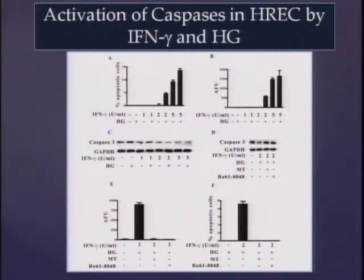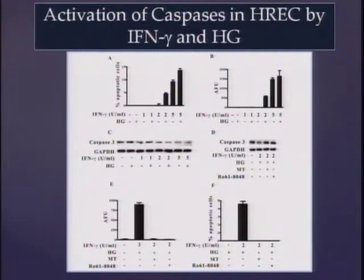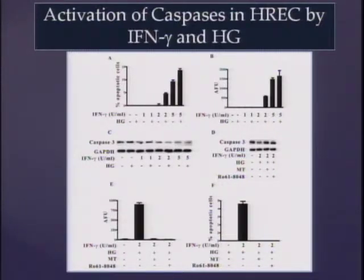Looking at percentage apoptotic cells: if you have interferon gamma in cell culture, you can induce apoptosis in HREC, but you can prevent it with either MT or R061. This clearly implicates IDO in interferon gamma-mediated apoptosis of HREC.